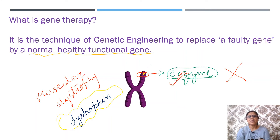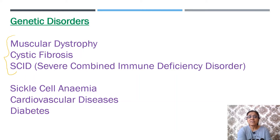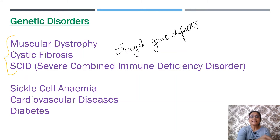Now we will see a few examples of genetic disorders. There are single-gene defect disorders like muscular dystrophy, cystic fibrosis, and SCID, which stands for severe combined immune deficiency disorder. There are also complex genetic disorders such as sickle cell anemia, cardiovascular diseases, and diabetes.